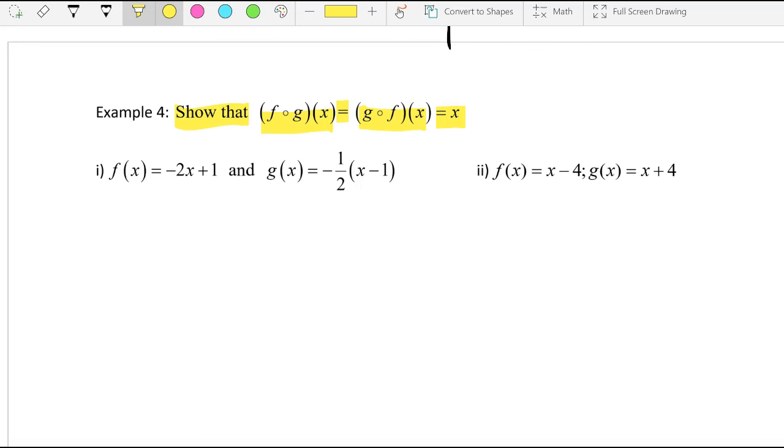Show that f composed with g of x is exactly the same as g composed with f of x, which they both come out to be x. So we are going to separate these two. Show that, meaning that now we're writing proofs. Anytime that you're writing proofs, you have to be very neat and be very clear. You have to do two compositions here, and both compositions have to equal to x.